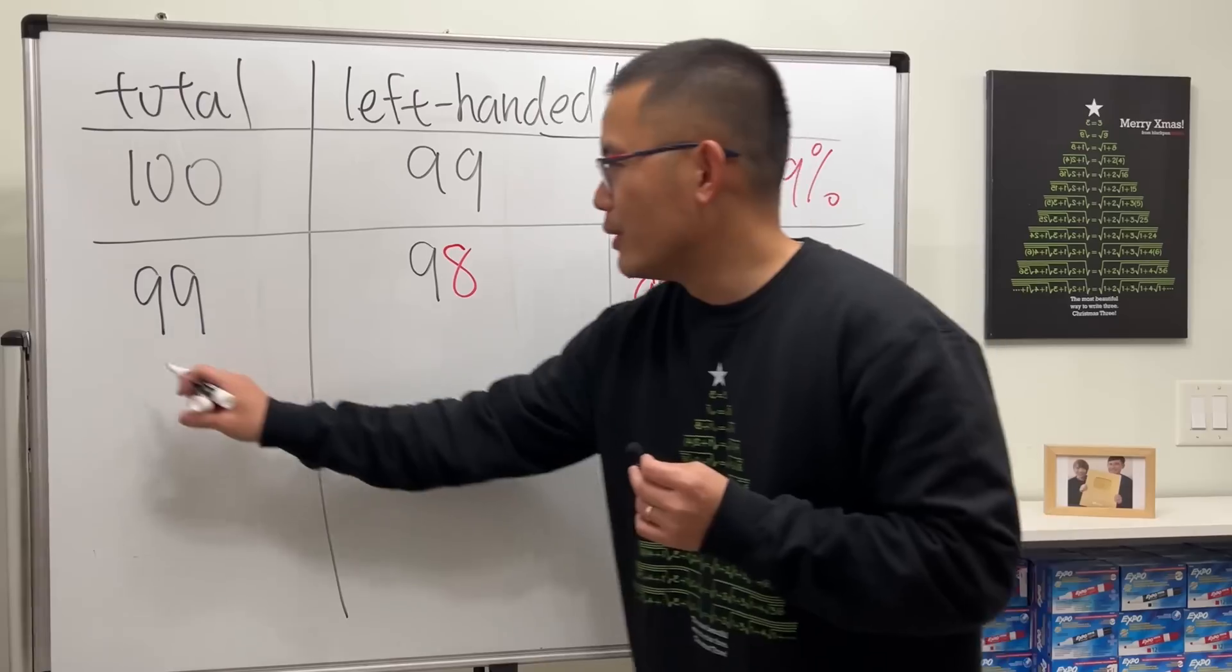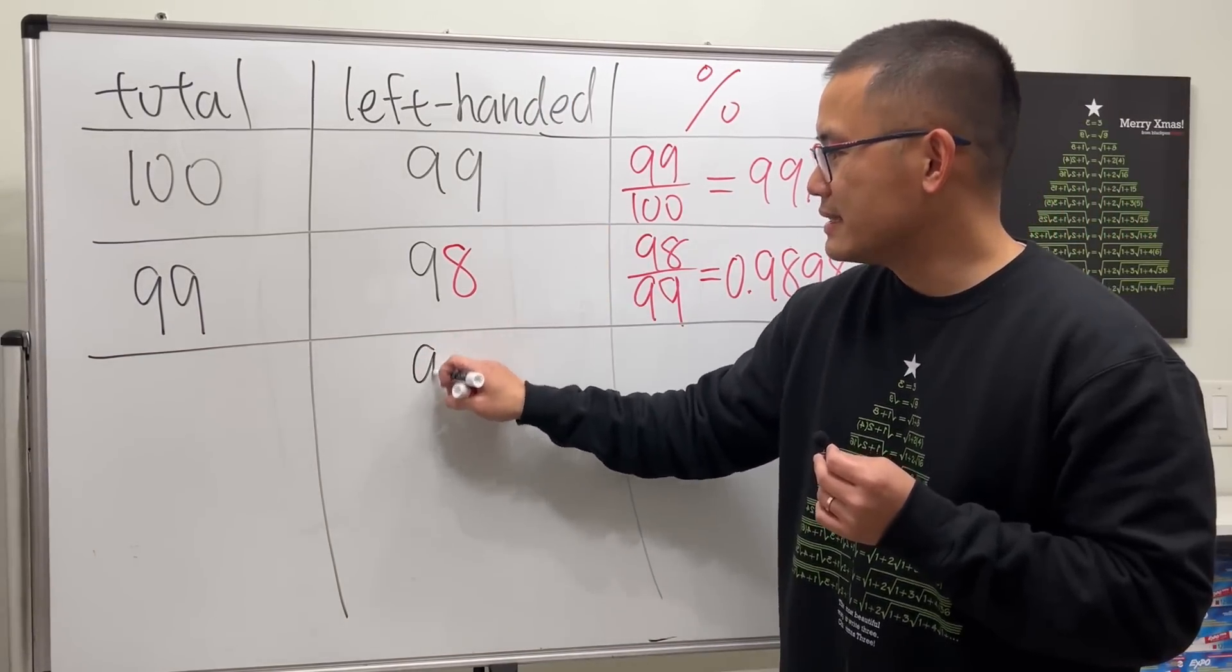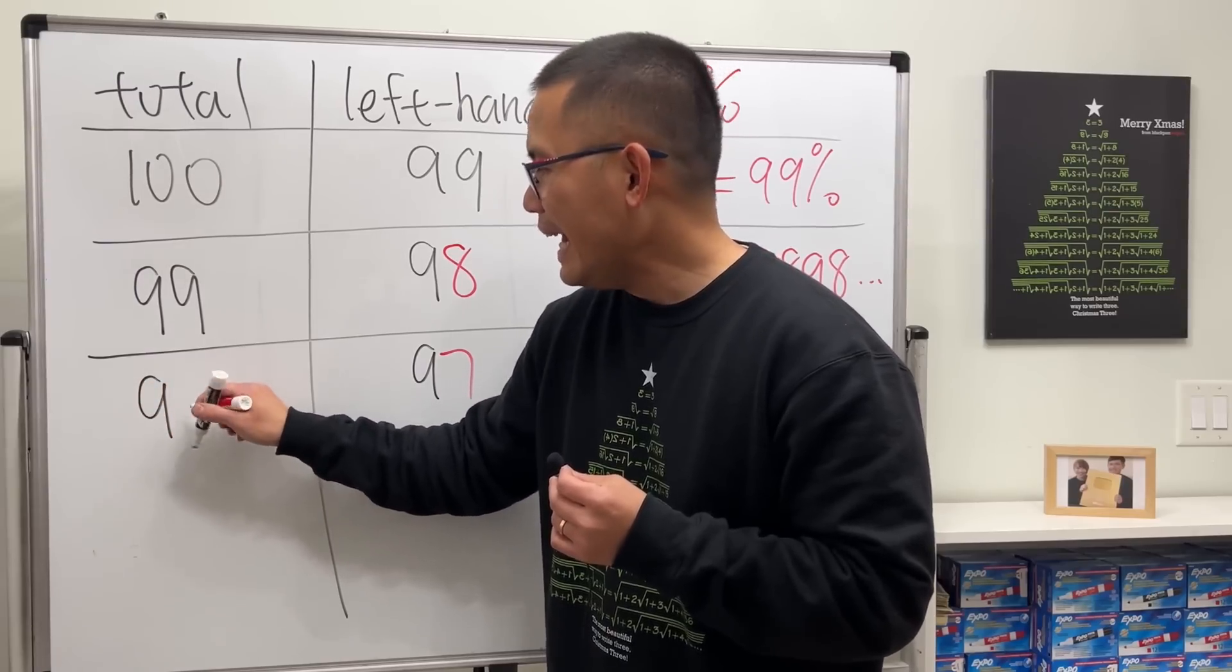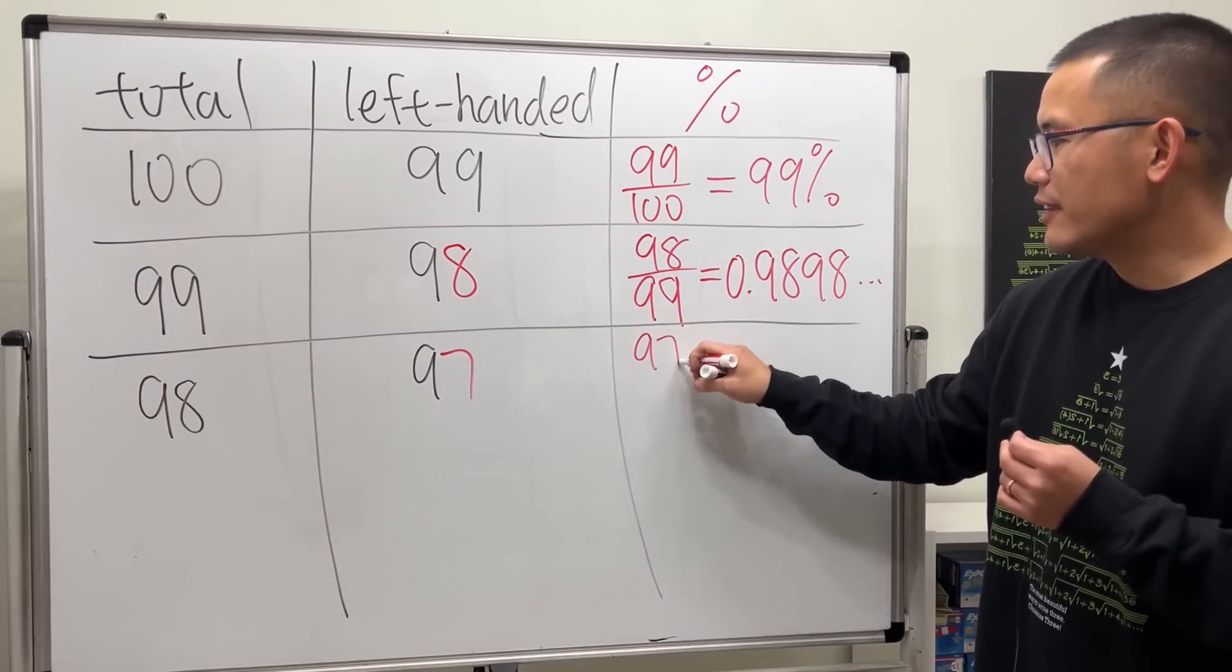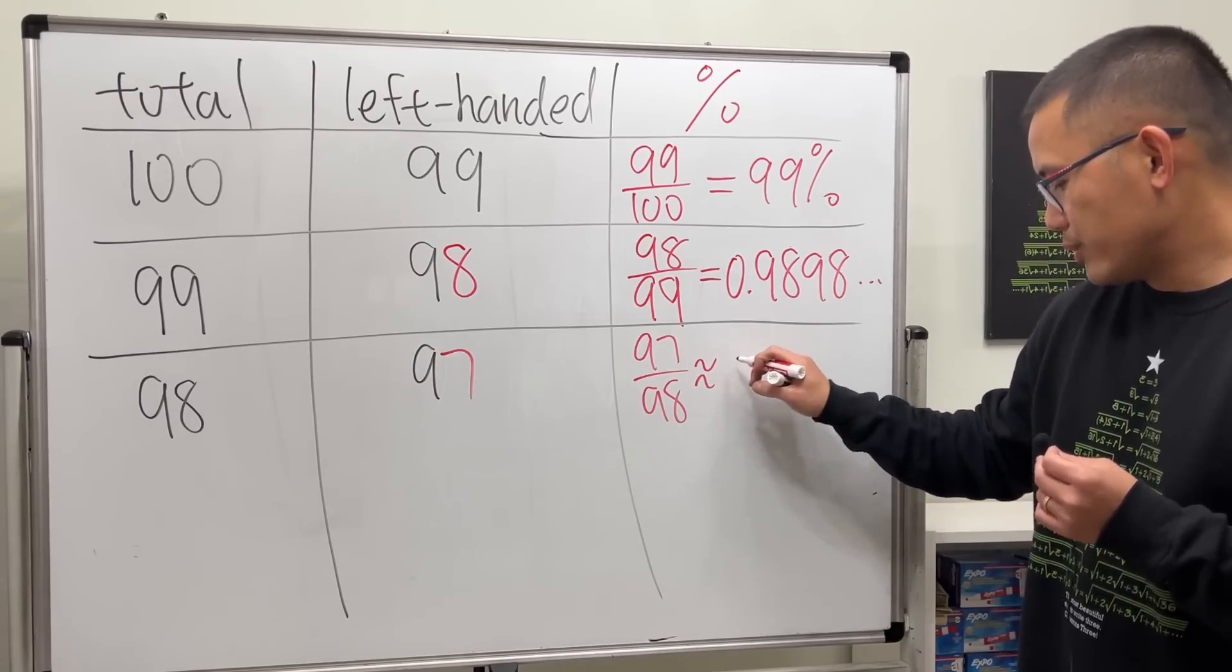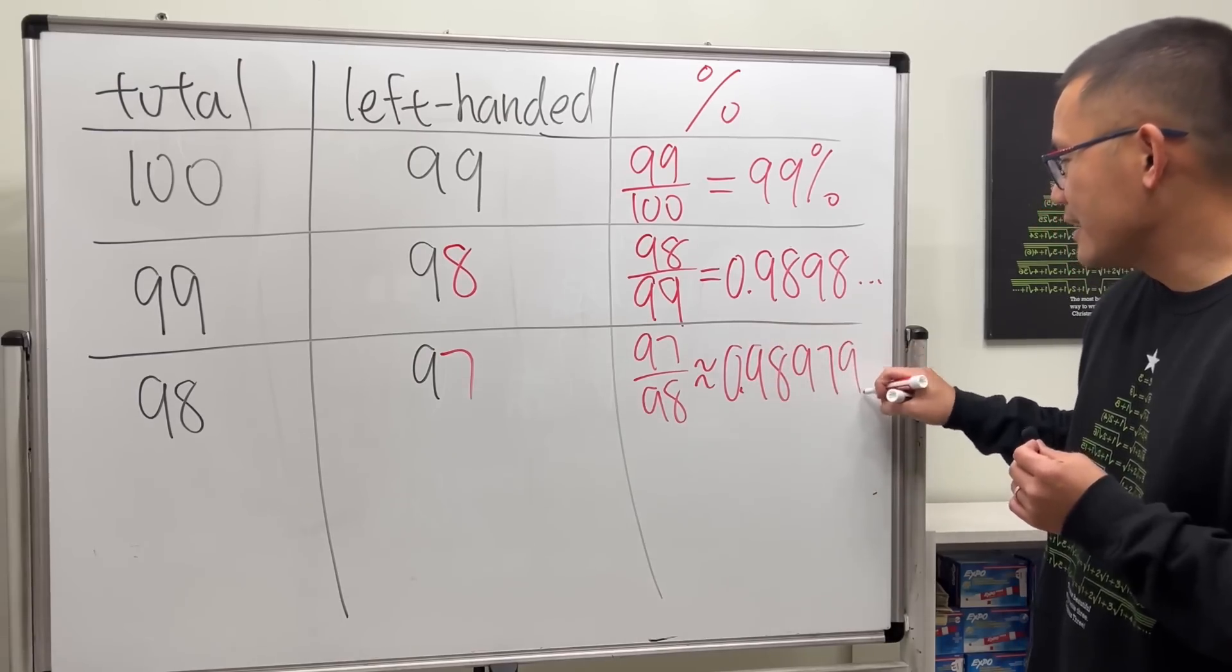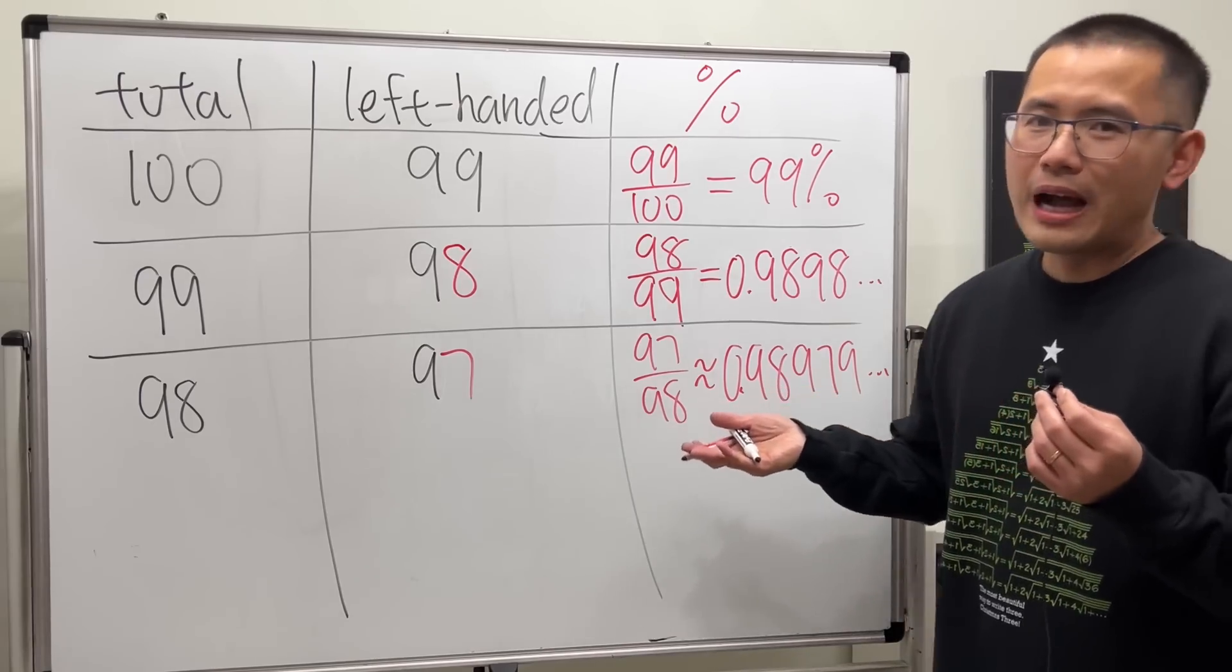How about if we remove two people? Well, in that case, that means we will get 97 left-handed people and then we will have 98 as the total. And then if you divide 97 by 98, this is about equal to 0.9897.